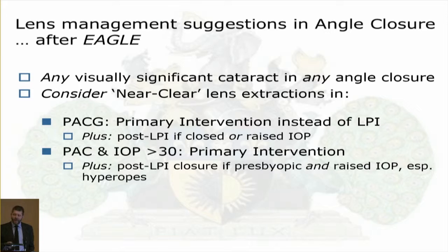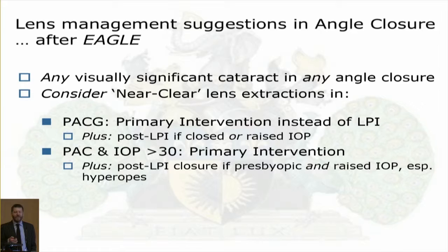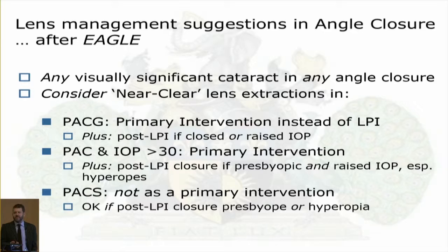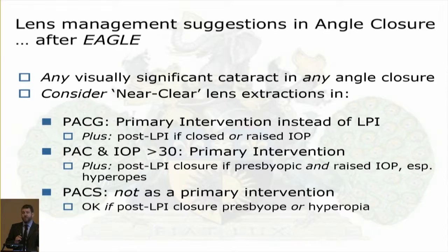If the patient has already had a PI and has raised pressure, we may proceed to lens extraction. For those with only raised pressure, clear lens extraction is a primary intervention. Post-PI with residual closure in presbyopic patients — particularly hyperopes — we take out their lenses. But primary angle closure suspects with normal pressure are still having laser iridotomy, with some also having clear lens extraction if they are presbyopic, hypermetropic, and still have closure.